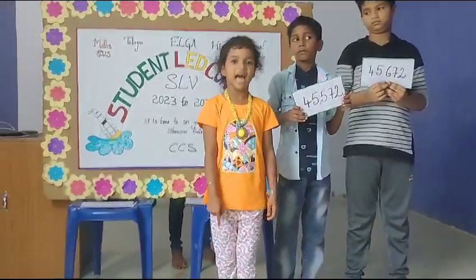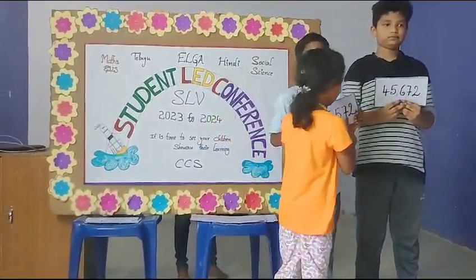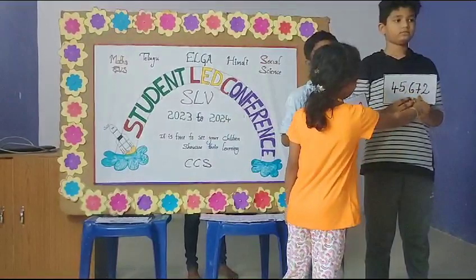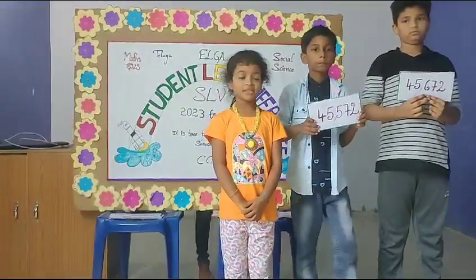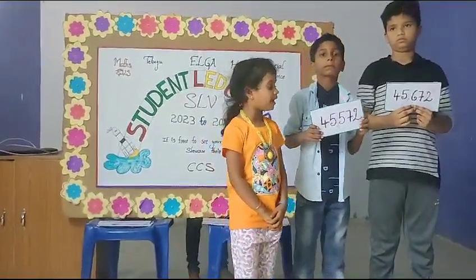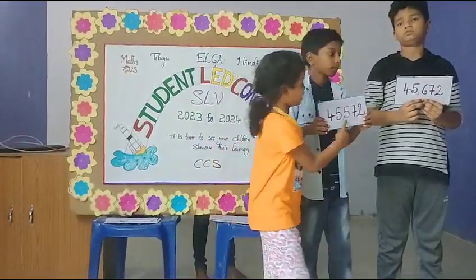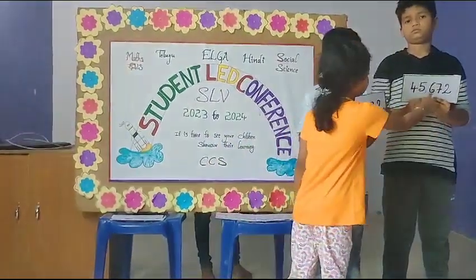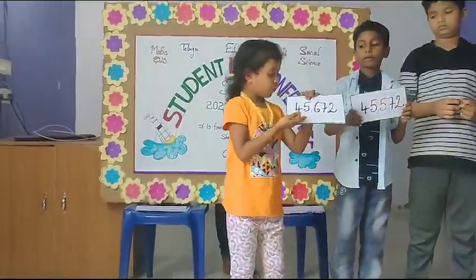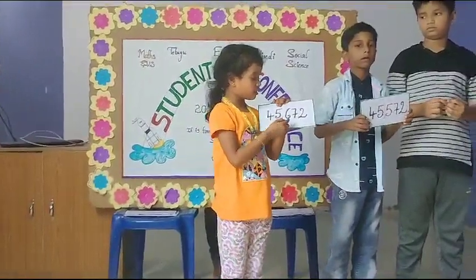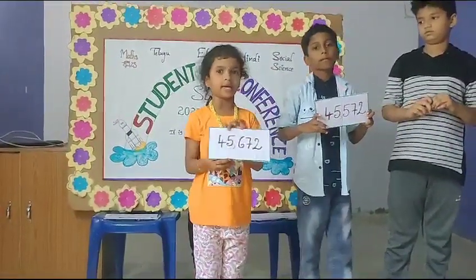Next I will compare the 10s place value — this is 7 and this is also 7, same numbers. Next I will compare the 100s place value — this is 5 and this is 6. This is a bigger number, so 45,672 is the bigger number.